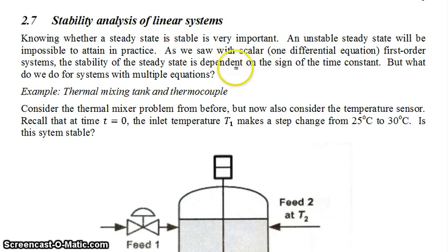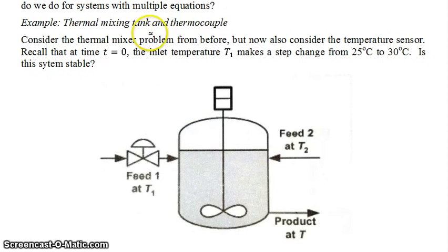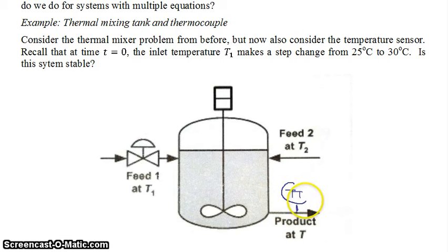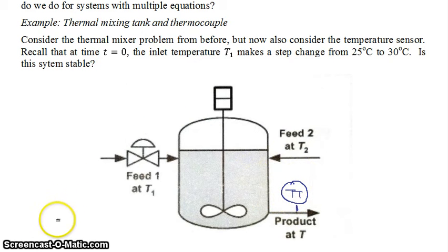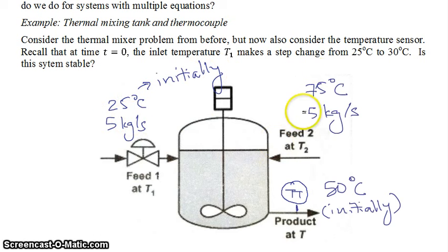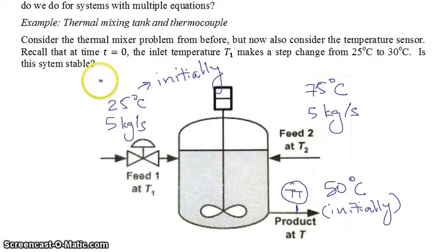This example is going to be in the context of a thermal mixing tank and a thermocouple, which is situated right here. It's a temperature sensor, and we're going to look at the dynamics of both the process itself and the temperature sensor. We have the temperature and flow rates of both inlet streams, and the outlet stream is initially at 50 degrees C. At time t equals zero, this inlet temperature switches from 25 degrees C up to 30 degrees C. The question is: is this system stable? Will it reach a new steady state that is stable?